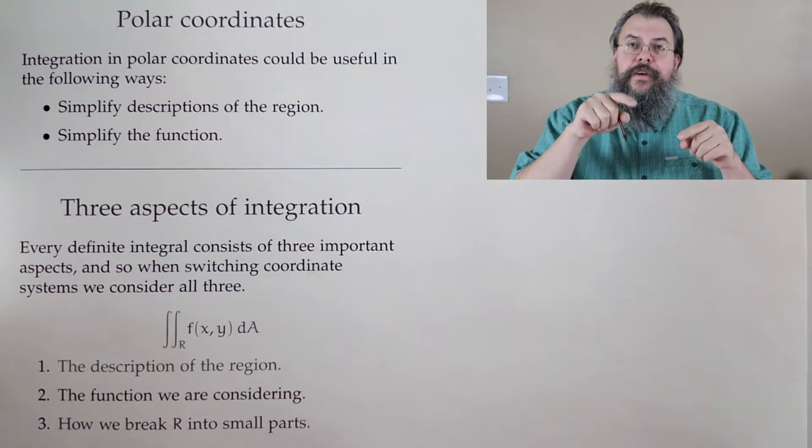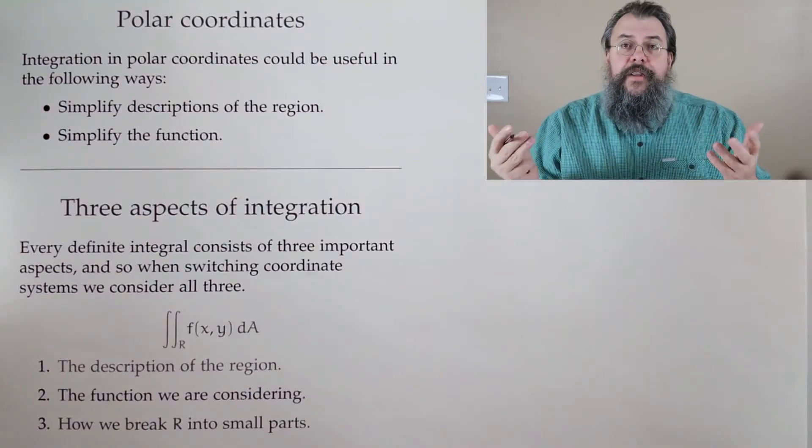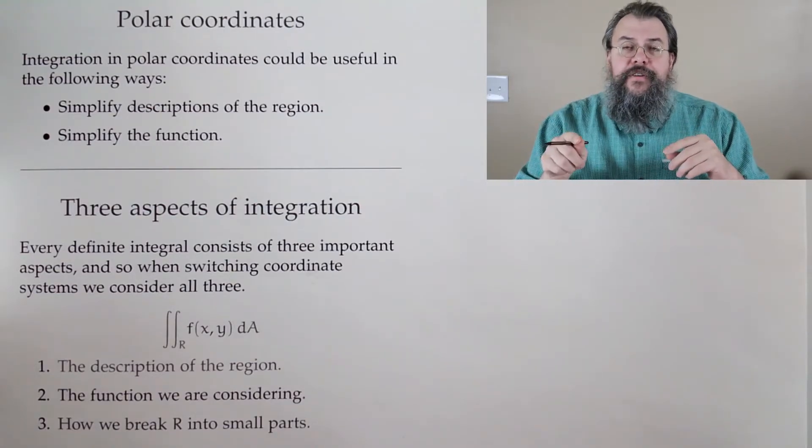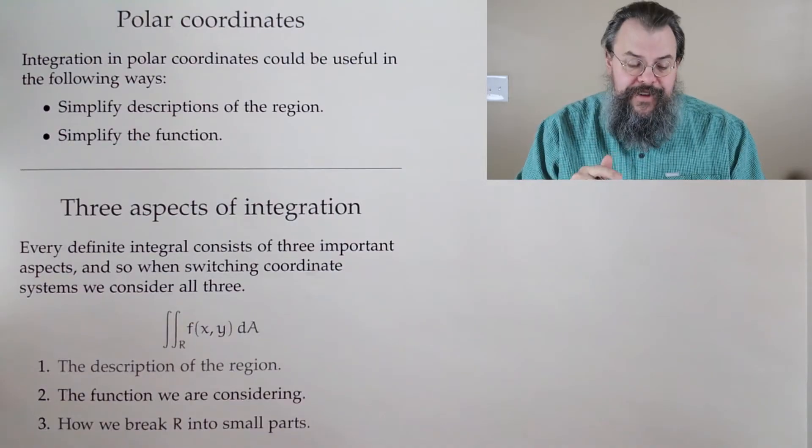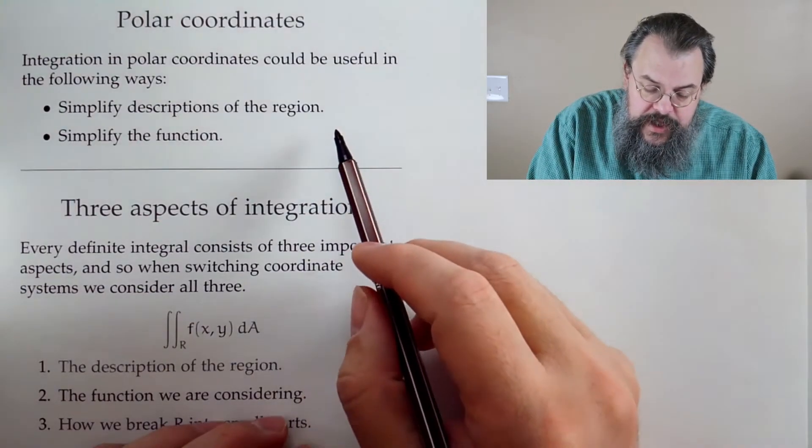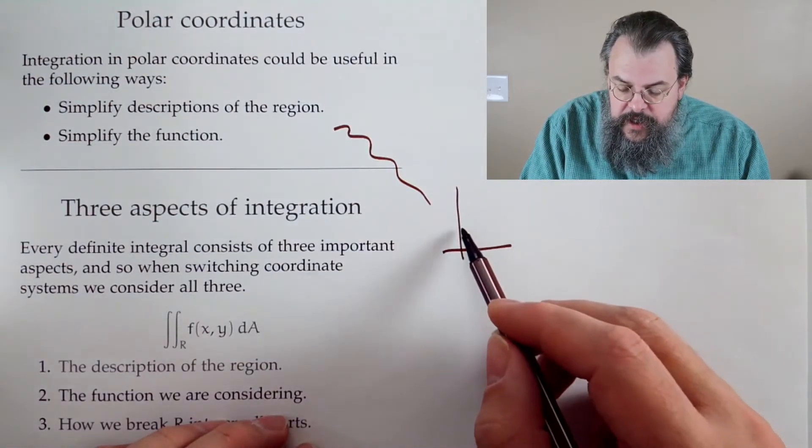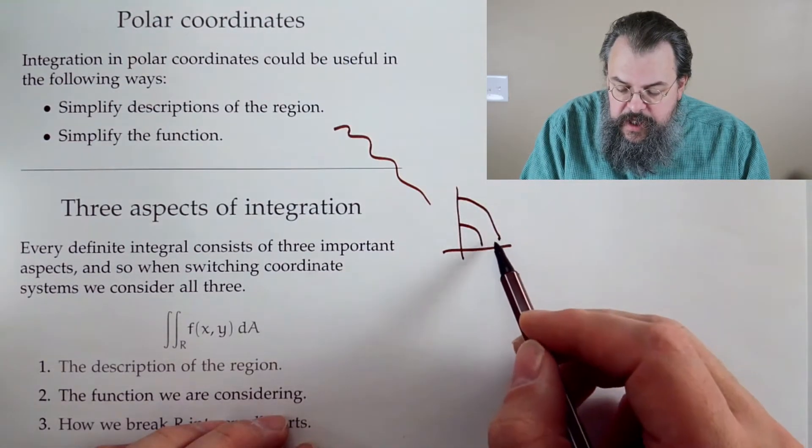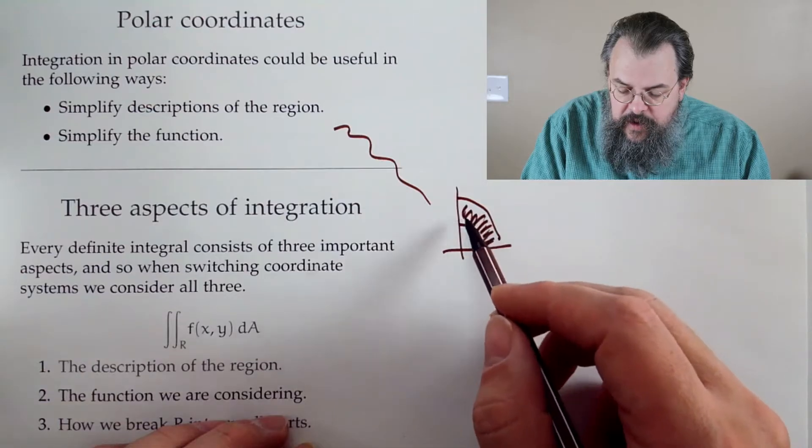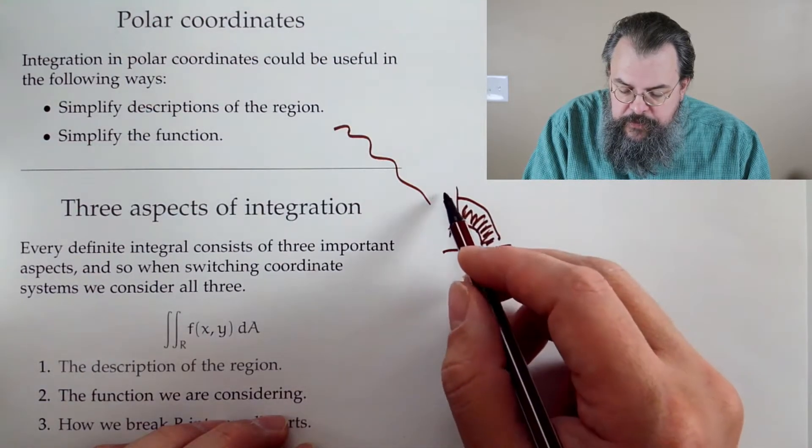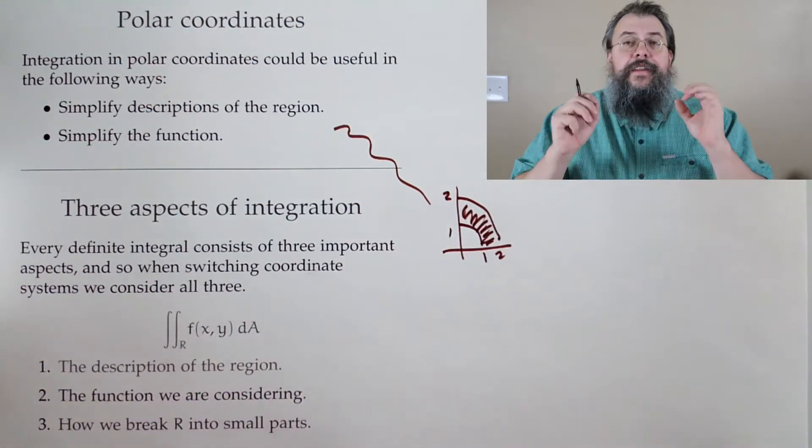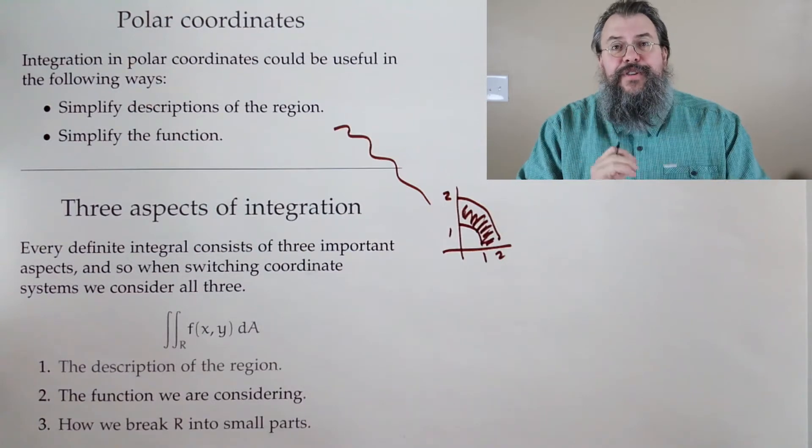but lousy for pieces of circles. On the other hand, polar coordinates great for pieces of circles, lousy for rectangles. So you can imagine, hey, I could have something where my region looks like between two circles, maybe a radius one and two. And then I say, oh, that's so simple to describe in polar.